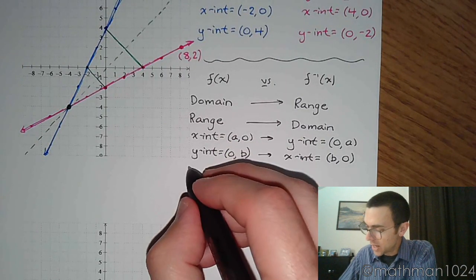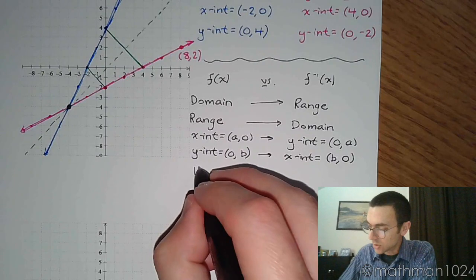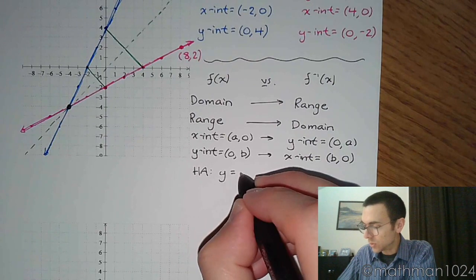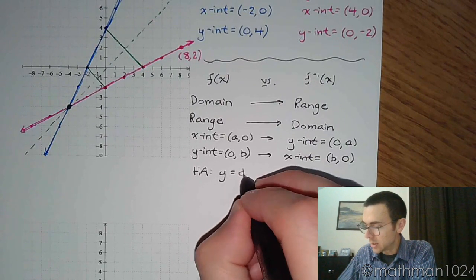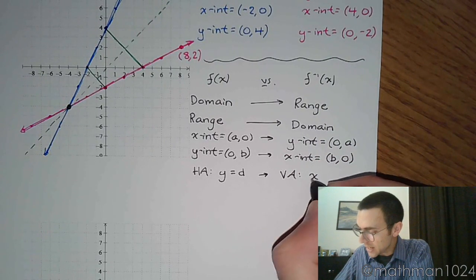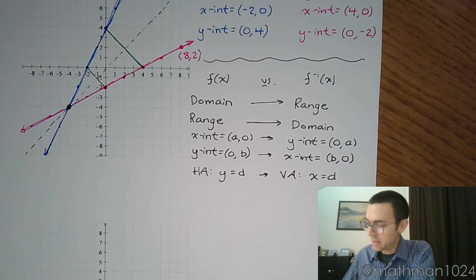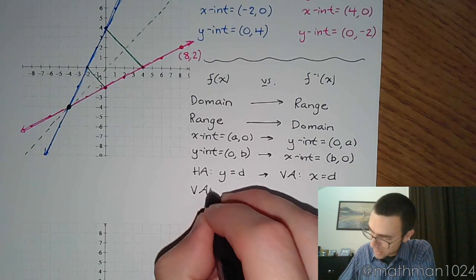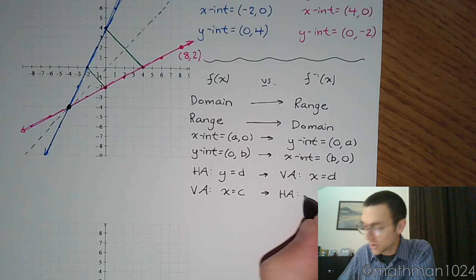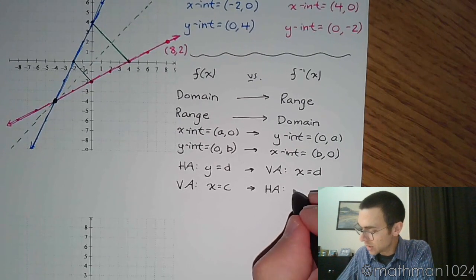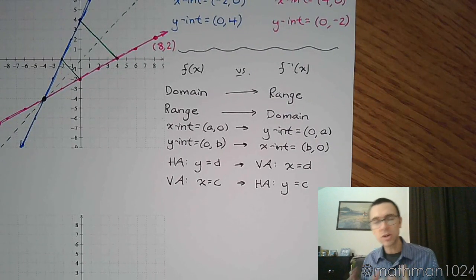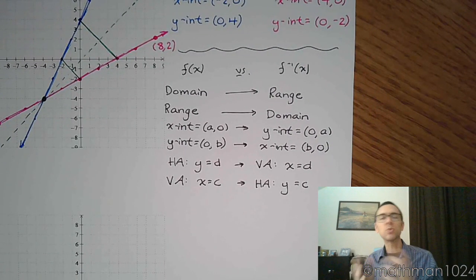If you have a function that has an inverse and you have a horizontal asymptote, and suppose the horizontal asymptote is y equals d, that would correspond with a vertical asymptote of x equals d. If you have a vertical asymptote that says x equals c, that means that you know for its inverse there's a horizontal asymptote of y equals c. Again, I can't stress this enough, that when you go from a function to its inverse, x becomes y, y becomes x.